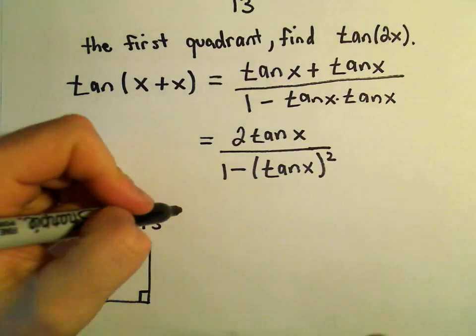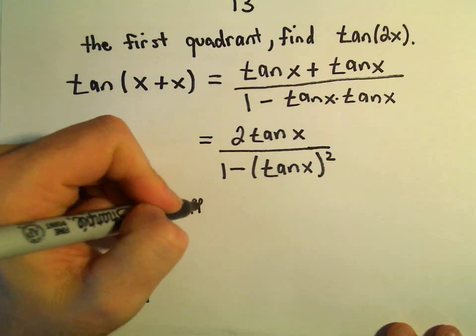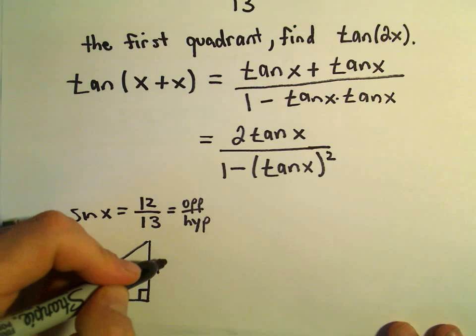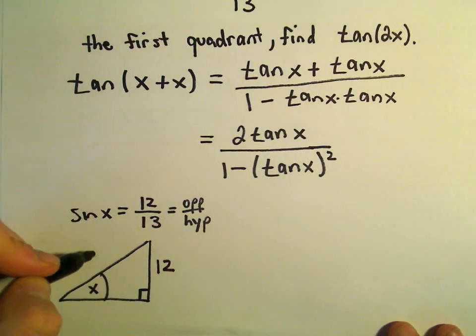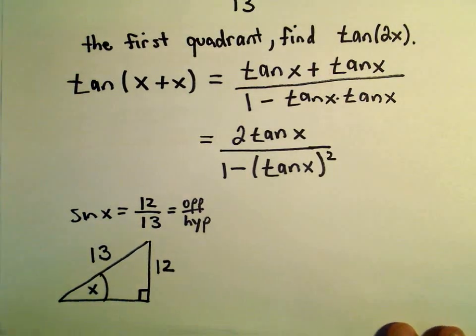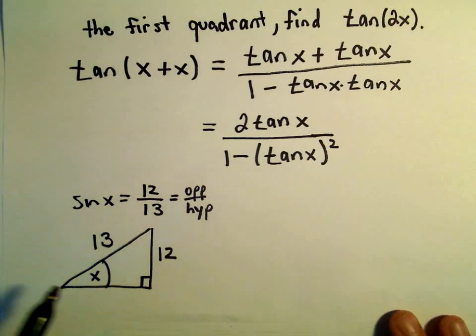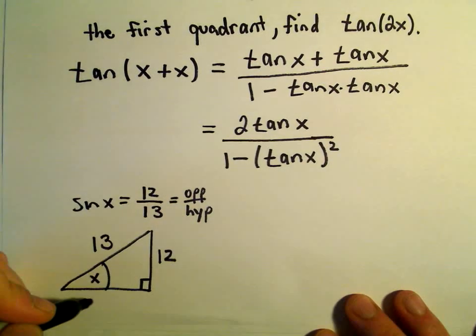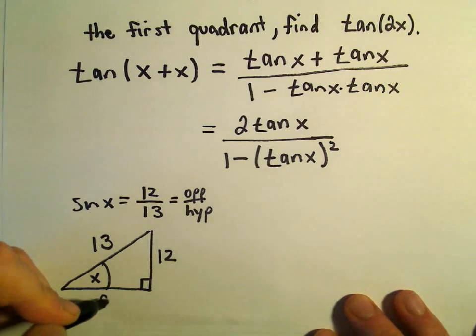Again, remember sine is the opposite, the ratio of the opposite to the hypotenuse. So we can assume that the opposite side is 12, the hypotenuse is 13. We would have to figure out the missing side using the Pythagorean theorem. So maybe we'll call the missing side here A.